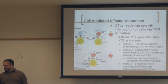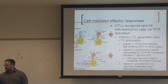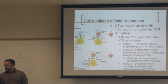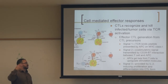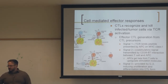CTLs recognize and kill infected cells and tumor cells via their TCR. Signal 1 is TCR binding to peptide presented on MHC class I by an APC. CTLs recognize antigen best in context of co-stimulatory signals from the APC — they don't just encounter viral or tumor antigen directly; it must be presented by an antigen-presenting cell.